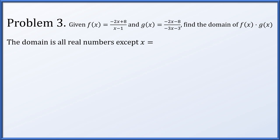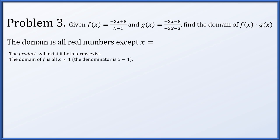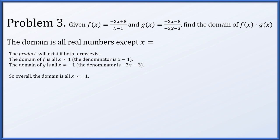Problem three: given f(x) equals (negative 2x plus 8)/(x minus 1) and g(x) equals (negative 2x minus 8)/(negative 3x minus 3), find the domain of the product f(x) times g(x). The product of two numbers exists provided both numbers exist. For f: all x other than 1, since the denominator is x minus 1. For g: all x other than minus 1, since that makes its denominator zero. Overall, x can be any number except plus or minus 1.